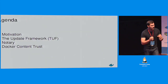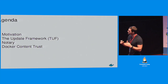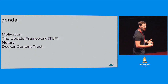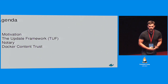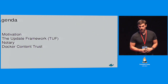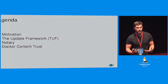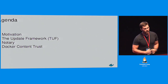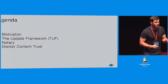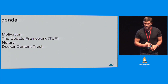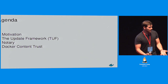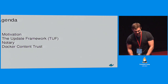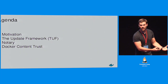The agenda is very simple. I'm going to introduce you to the need for image signing, but I'm really going to focus on the need for a security framework around image signing. Then I'm going to go over TUF, the update framework, which is the core fundamental framework we're using at Docker. Then I'm going to go over Notary, an open source tool we launched at DockerCon US — an opinionated implementation of TUF. Finally, I'll go over Docker Content Trust, which is itself an opinionated implementation of Notary, using Notary to provide image signing.